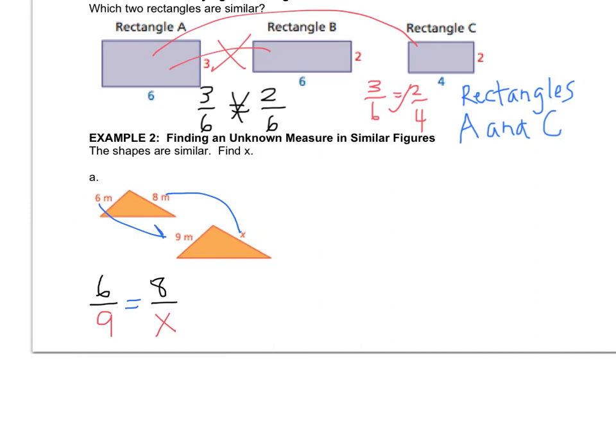And you have to go in the same direction. You can't do 6 over 9 equals X over 8. That's going one way this way and the other going this way. So you have to be the same order. And we'll do more of these in class if you're not sure what I'm talking about.